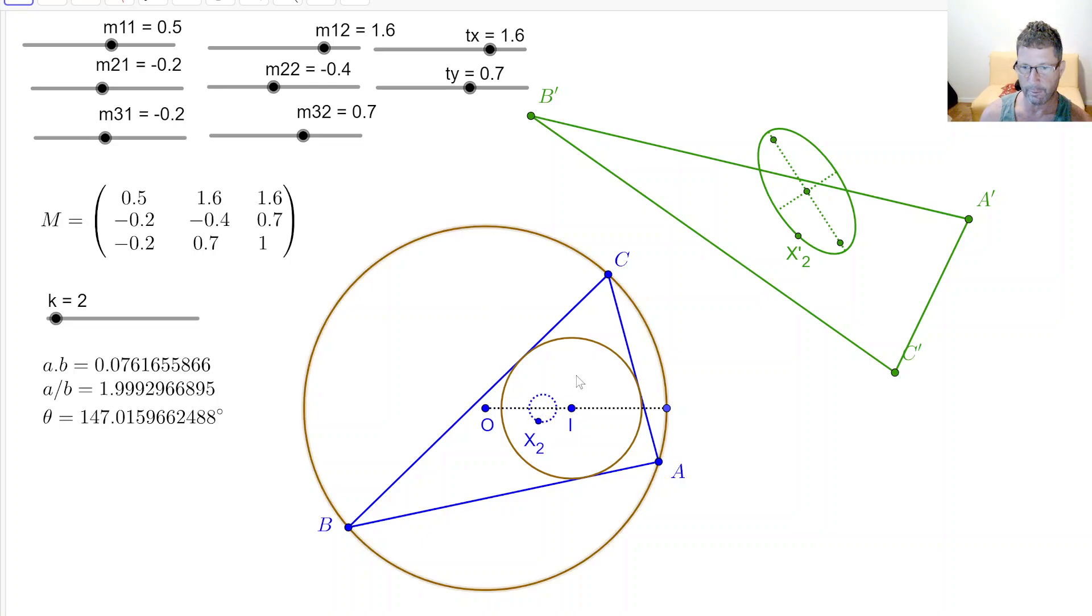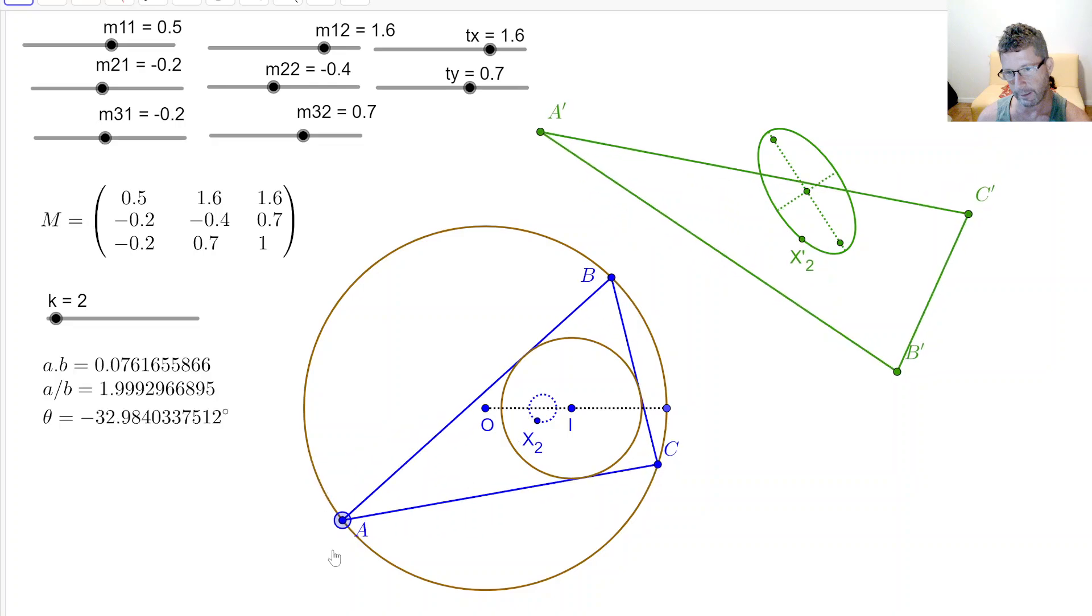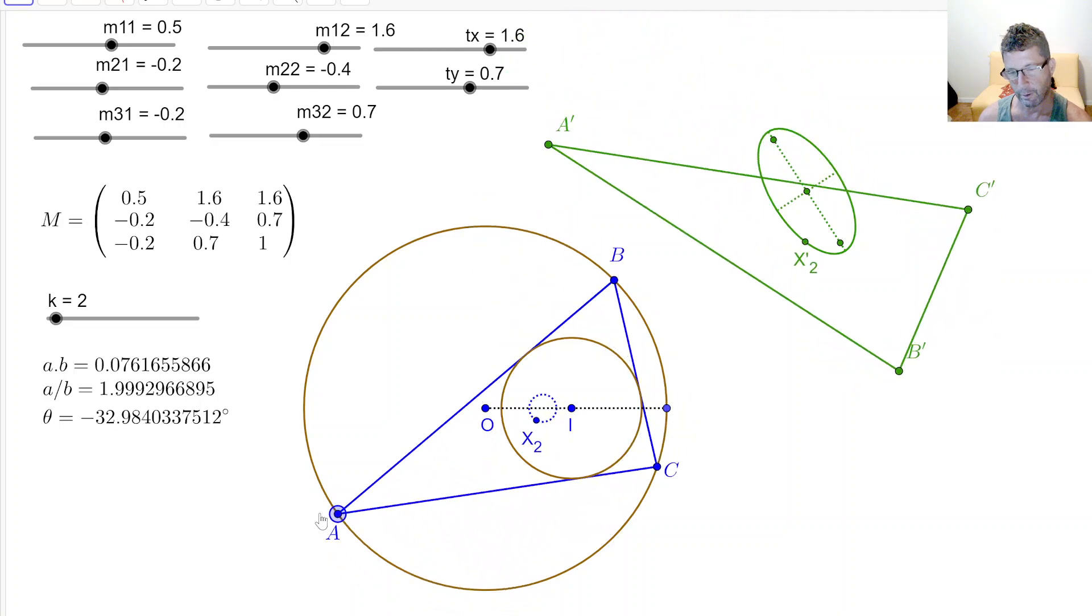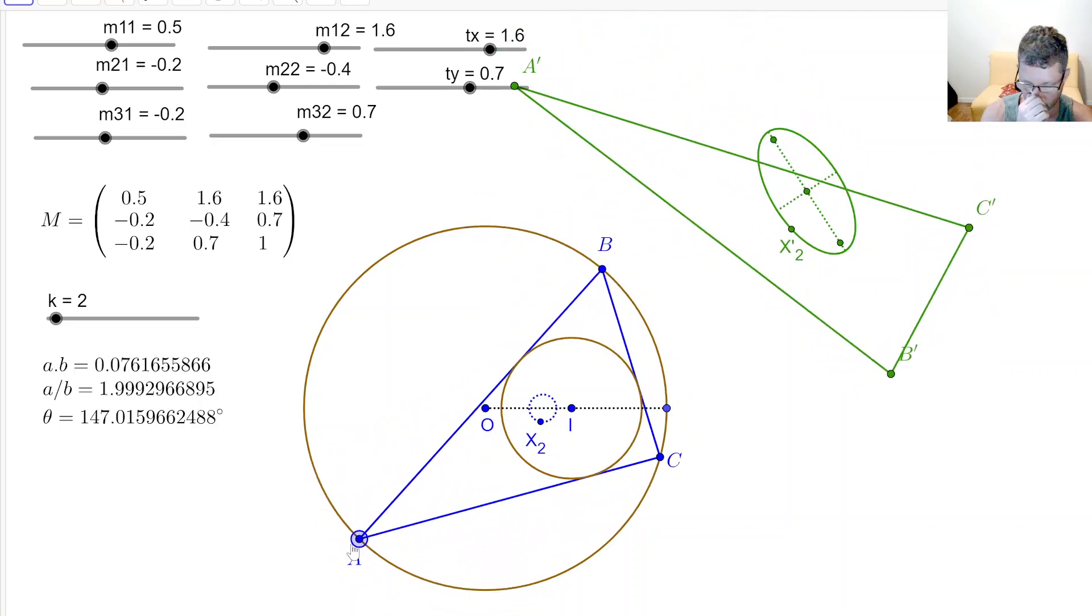And circumscribes an inner circular caustic. So I have this ABC family of Poncelet triangles. I'm showing here the locus of X2. Here's this little circular locus, so over the family X2 follows a circle.